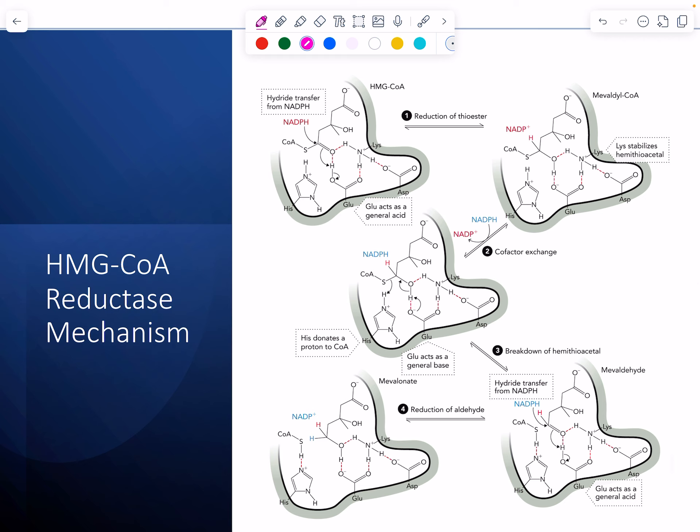We had our previous enolase mechanism had two main steps. Here, the HMG-CoA reductase has four steps. The important residues are glutamic acid 83, lysine 267, aspartic acid 283, and histidine 381.